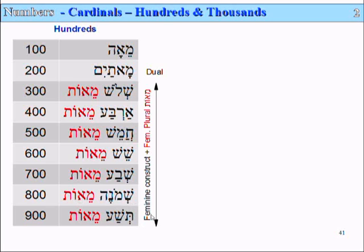Now I've noted here that this is the feminine construct form. It's called a construct because it's the feminine number with a slightly different vowel pointing used to construct other words — a feminine construct plus the feminine plural Meot.